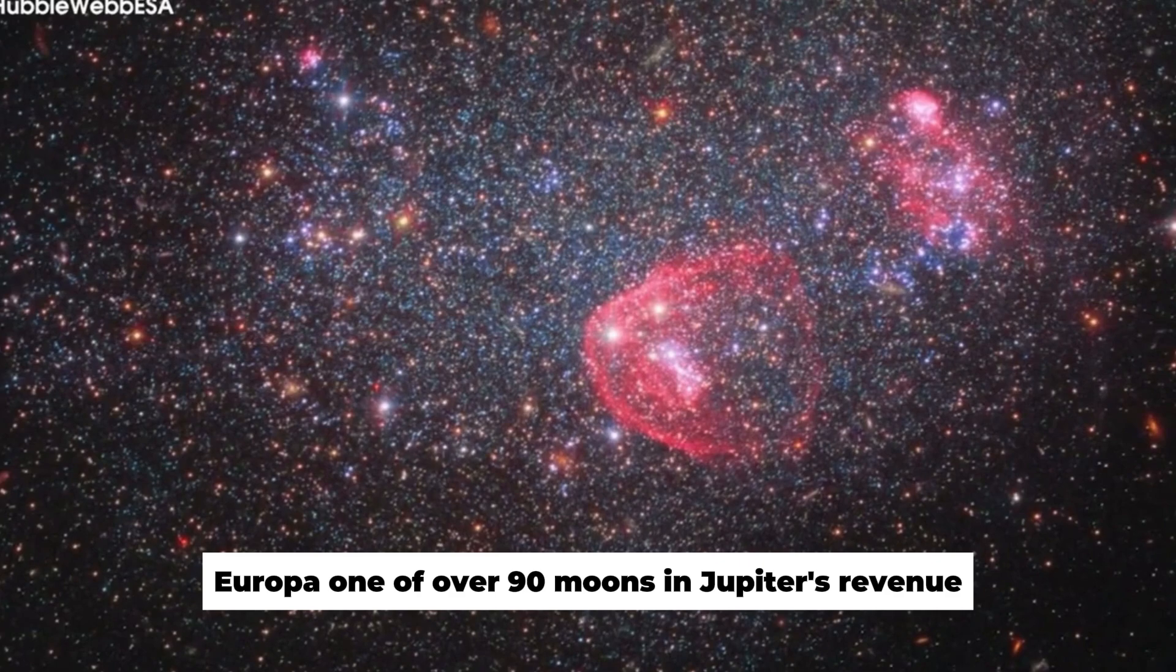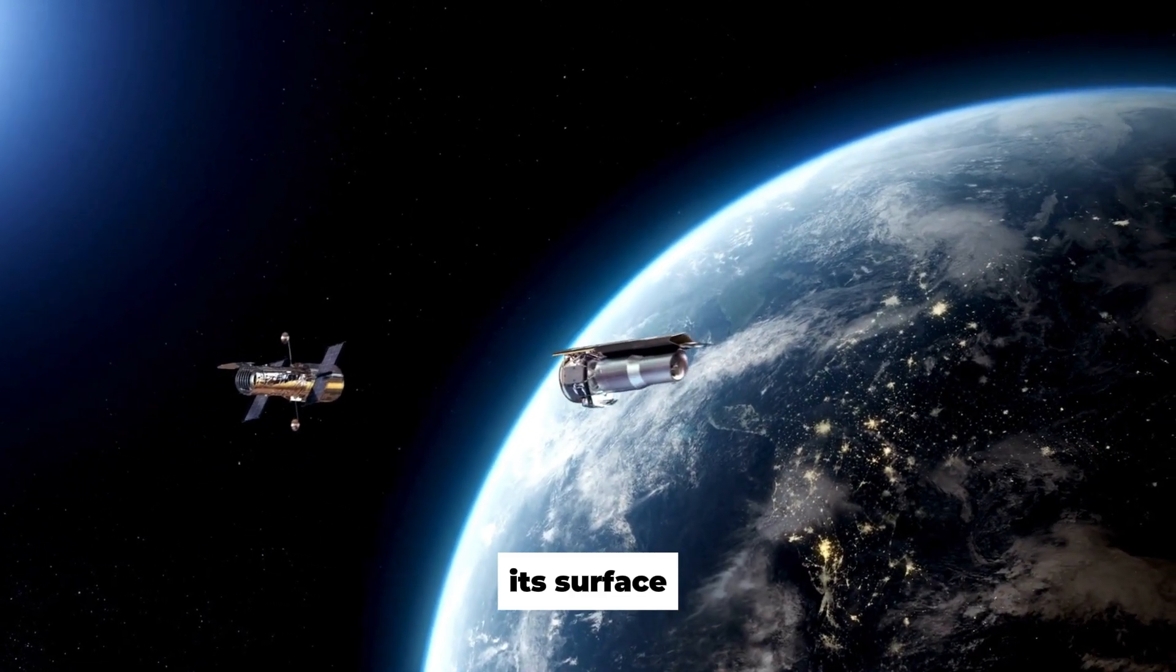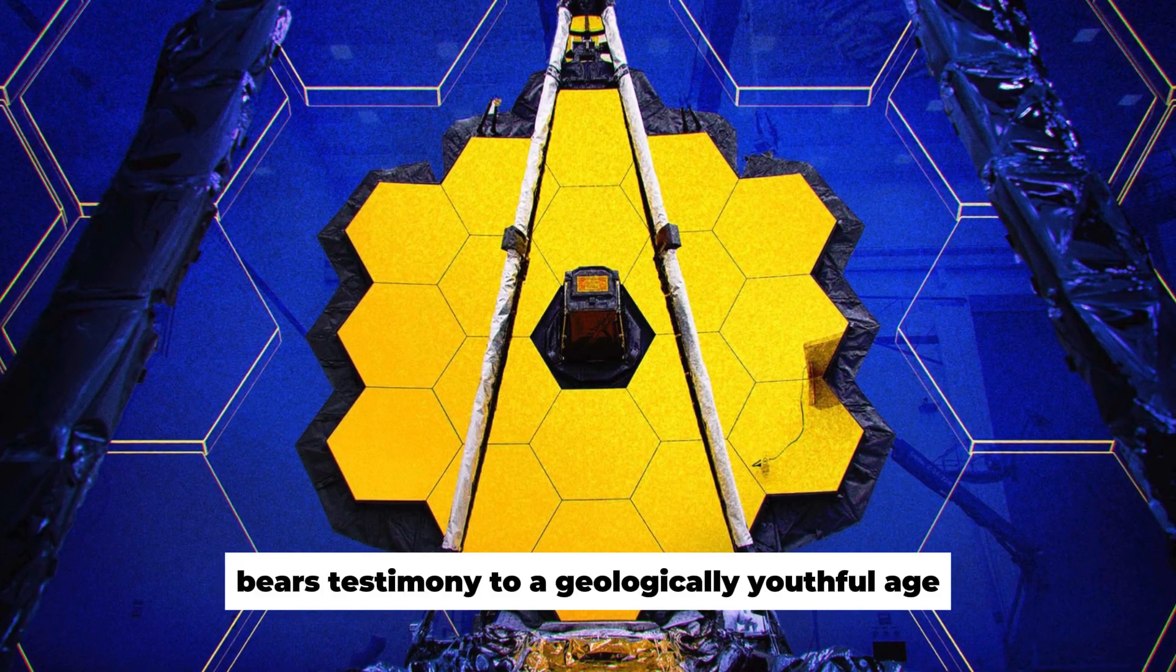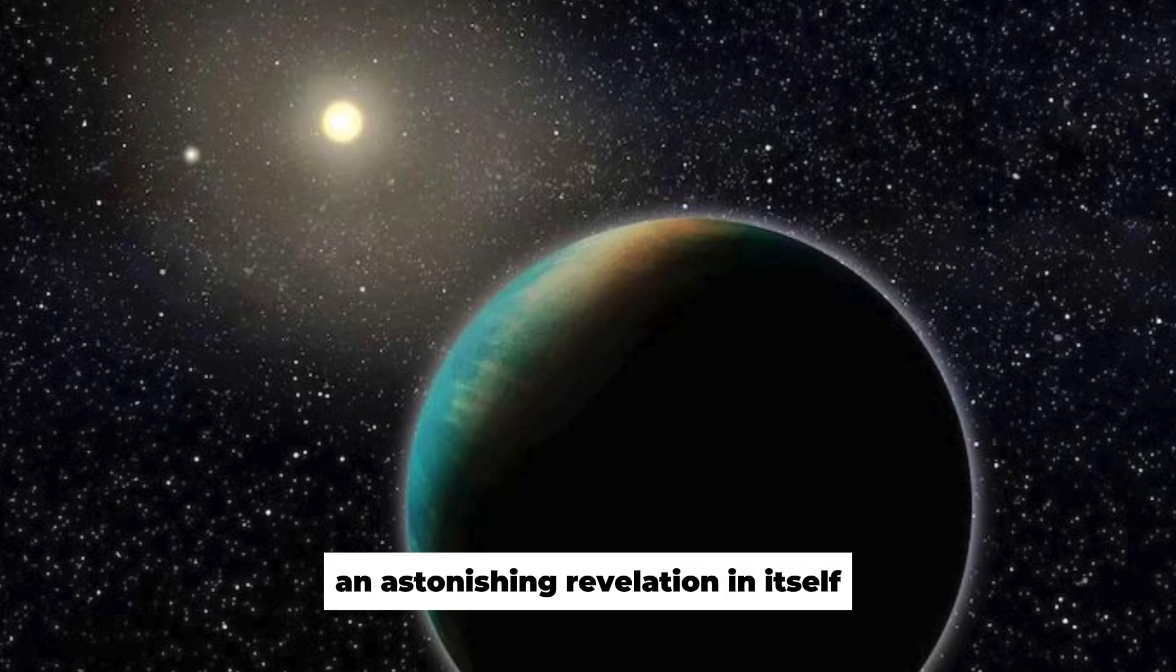Europa, one of over 90 moons in Jupiter's retinue, is the sixth closest to our planet. Its surface, primarily water ice with hints of silicate rock, bears testimony to a geologically youthful age, an astonishing revelation in itself.